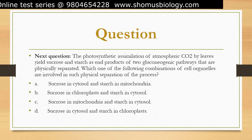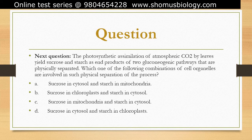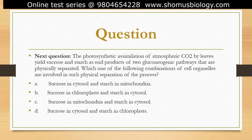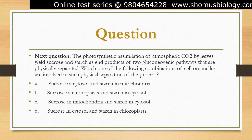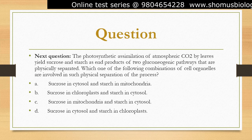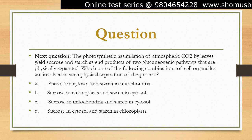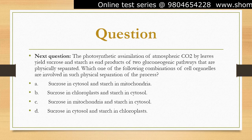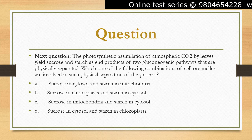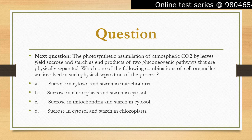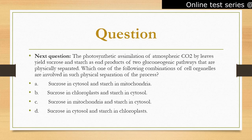During photosynthesis, CO₂ is assimilated into glucose-6-phosphate in the chloroplasts through the Calvin cycle. This glucose-6-phosphate is then transported to the cytosol, where it is converted into sucrose through a series of enzymatic reactions. The sucrose is then transported to other parts of the plant for use or storage. In parallel, in the chloroplasts, glucose-6-phosphate is further converted into glucose-1-phosphate, which is then polymerized to form starch. Starch is stored in the chloroplasts as insoluble granules and can be mobilized when needed for energy.